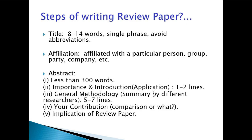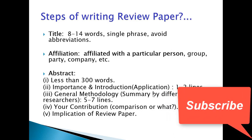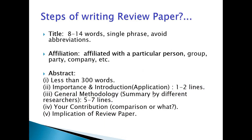Next, we will talk about the affiliation section. In this section, we will mention the authors and co-authors who helped us write our review paper. Next, we will discuss the abstract part. The length of the abstract should be less than or equal to 300 words. In this section, we will discuss the importance of our topic, covered in 1 to 2 lines. Next, we will discuss the general methodology — the different techniques used by the writers while writing the review paper on a particular topic.